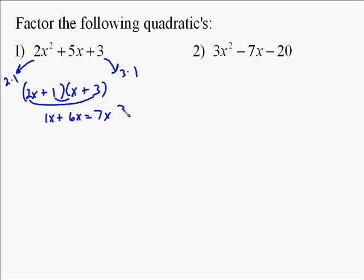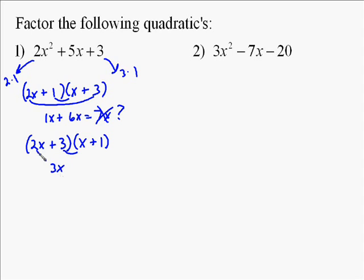Well, 2x times 3 is 6x, and 1 times x is 1x. That equals 7x. But that's not what we needed — we needed 5x. So we really only have one other option, and that is to interchange the 3 and the 1. Now we test it: 3 times x is 3x, and 2x times 1 is 2x. That gives us our needed 5x for the middle term.